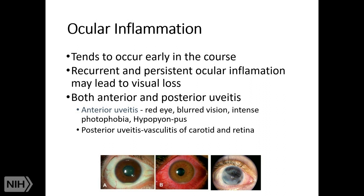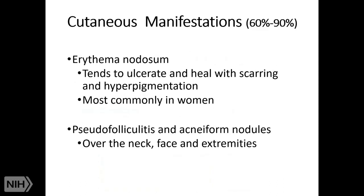The third, and in my opinion most important, involvement in these patients is ocular inflammation. It tends to occur early in the course of the disease. Recurrent and persistent ocular inflammation may lead to visual loss. In this group of patients, we can see both anterior uveitis, posterior uveitis, or panuveitis. Especially if you have any patient with panuveitis, you have to rule out Behcet disease.